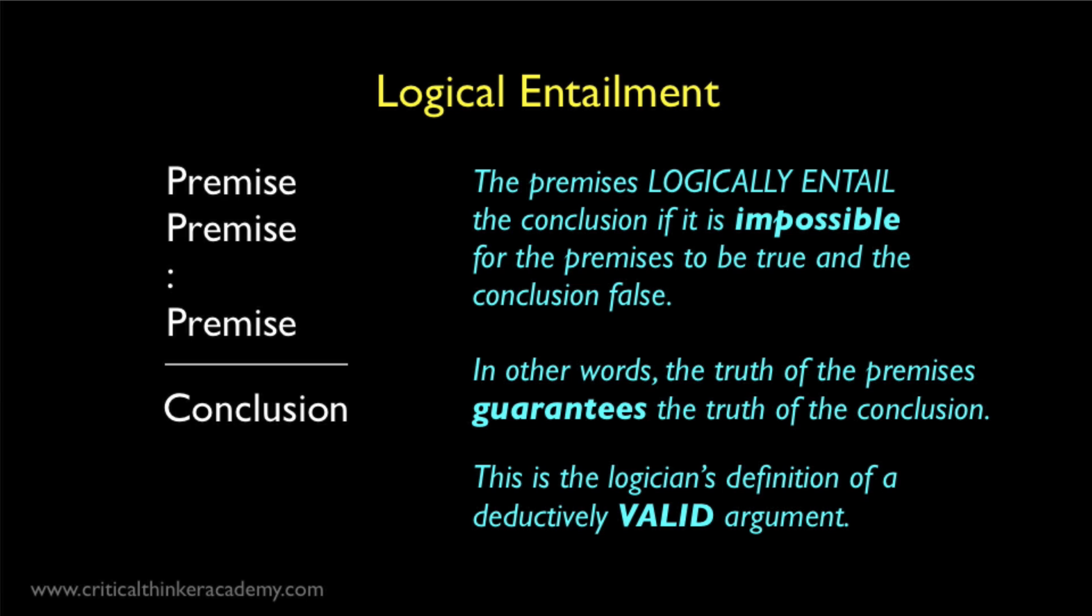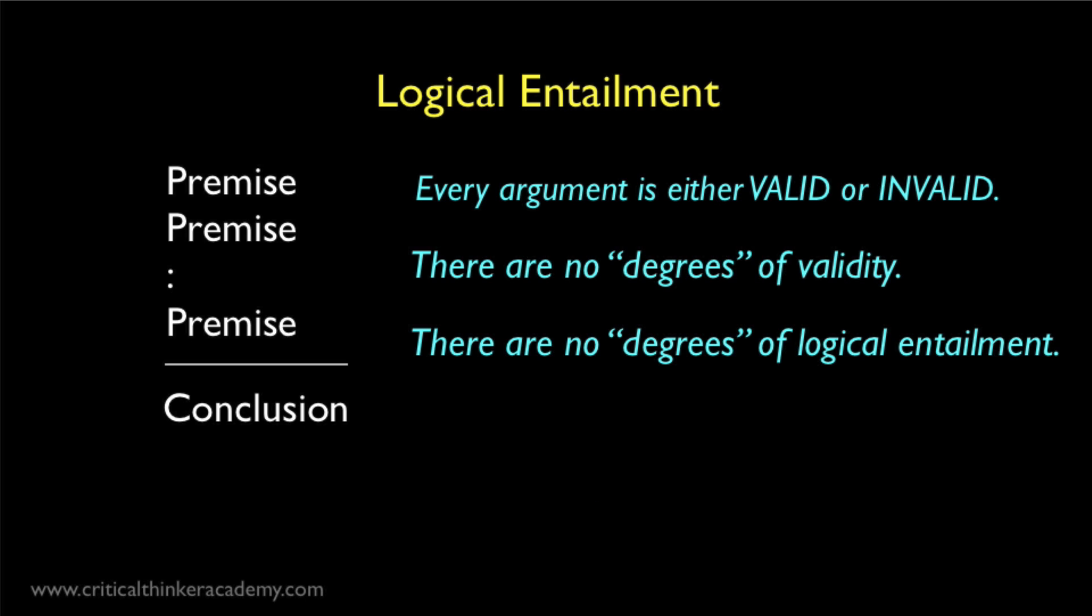If the argument is deductively invalid, then the premises do not logically entail the conclusion, which simply means that even if the premises are all true, it's still possible for the conclusion to be false. So logical entailment in this sense is a bivalent or binary property. It only has two values, yes or no, like a digital switch. Every argument is either deductively valid or it isn't. There are no degrees of validity, no degrees of logical entailment.